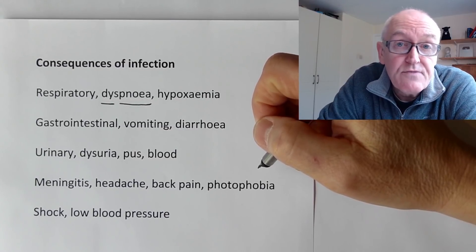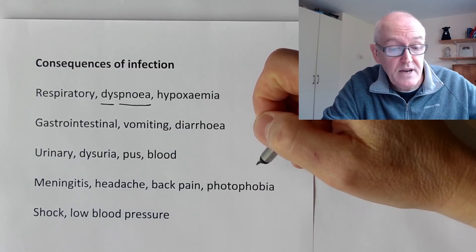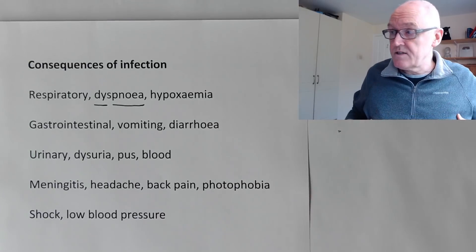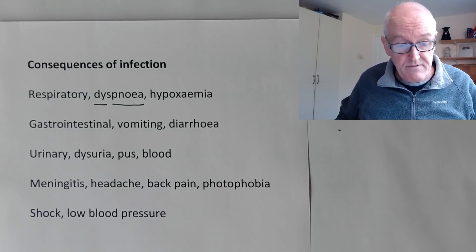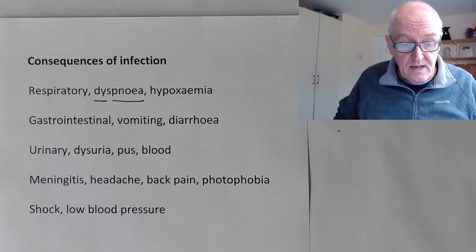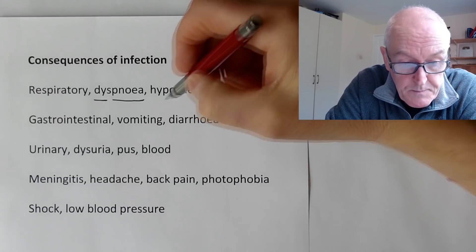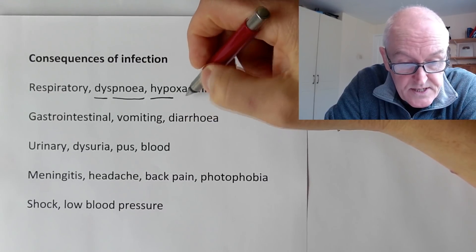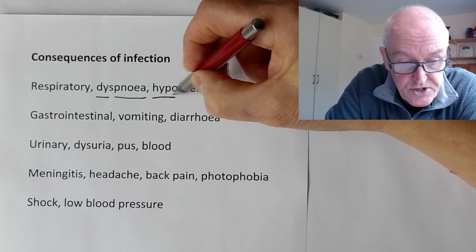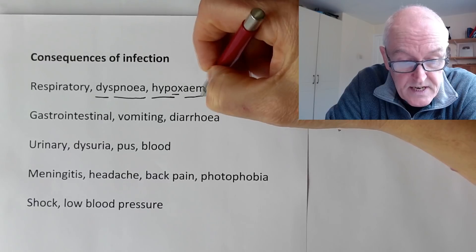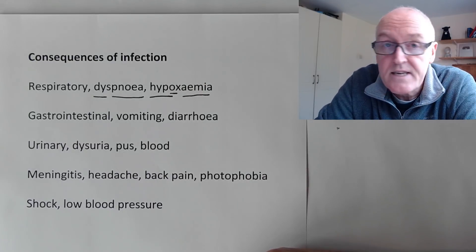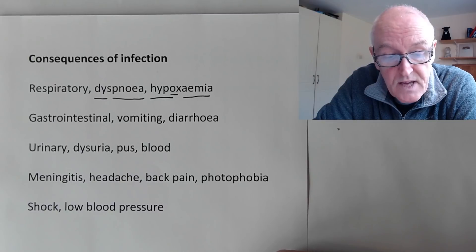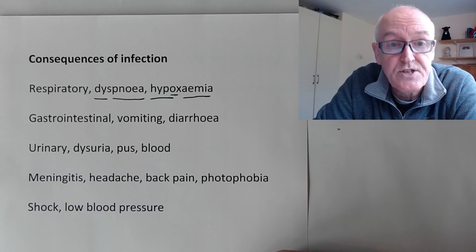If the infection is very bad - for example, if you've got a severe pneumonia with infection right down in the lung tissue, a very dangerous infection - that can cause hypoxemia. 'Hypo' is low, and this is the oxygen in the blood - 'aemia' means in the blood. So eventually it can drop the amount of oxygen in the blood if you have a severe condition like pneumonia.